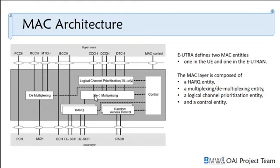The HARQ entity is used to transmit with acknowledgement and non-acknowledgement as needed, and to transmit and receive transport blocks. HARQ operates at the transport layer — this is the MAC layer, which sits between the upper and lower layers.